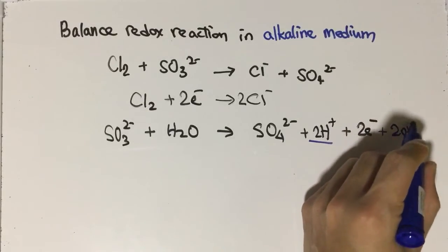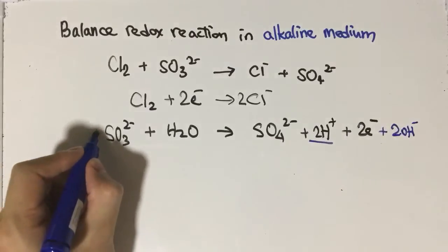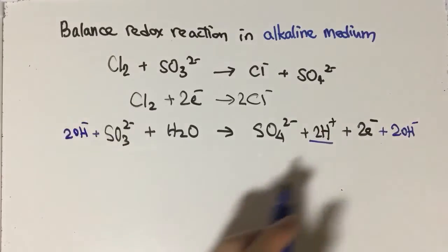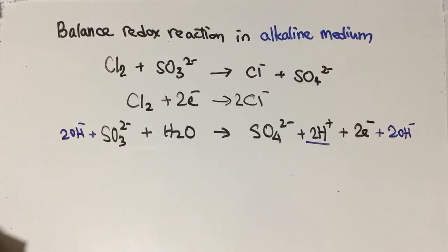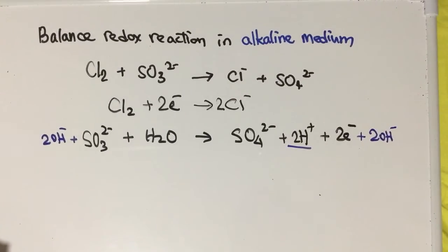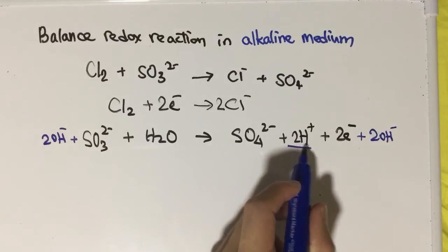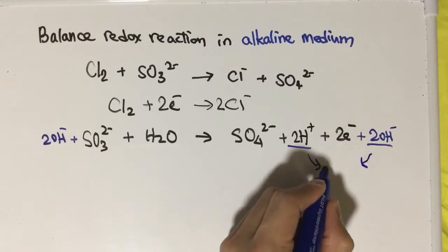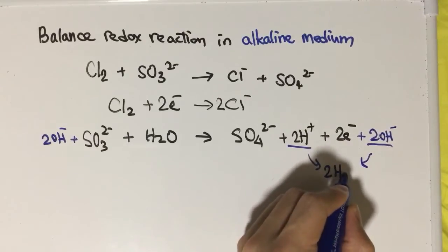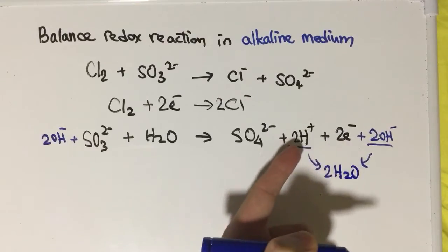Why do we do so? Because we want to eliminate the two hydrogen ions. Two hydrogen ions plus two hydroxide ions is actually 2H₂O, so we can remove the hydrogen ions.